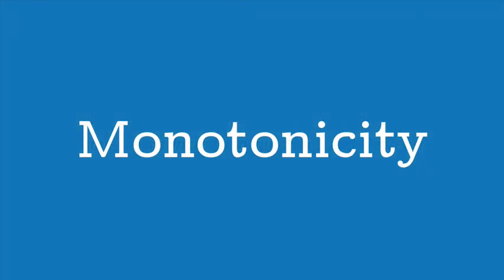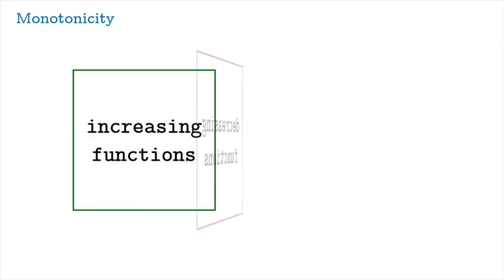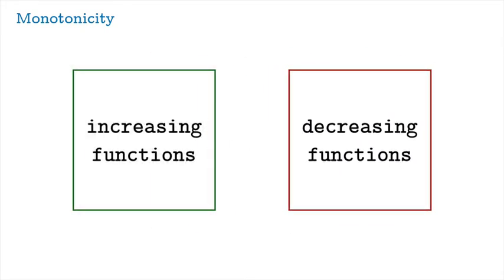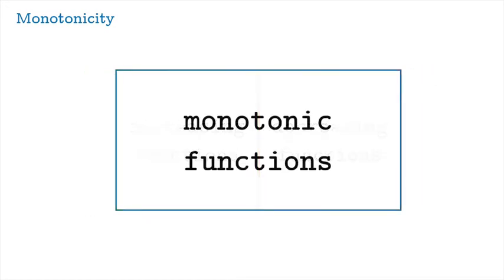Now let's talk about monotonicity. Monotonicity is a fancy word that covers two options. Suppose you were to heap all the increasing functions in one box and decreasing functions in another. The point is: if you want to talk about both of them together, you're going to refer to the collection of monotonic functions. Monotonic functions are functions that are either increasing or decreasing.